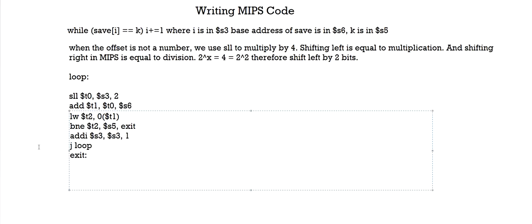This is our complete MIPS code for this while statement. As you can see, MIPS is basically a much longer process of coding than what we usually use in high-level programming languages. Quick recap: because of the while loop, we know it's going to be a loop, so we need the loop label, a branch instruction, and a jump instruction.